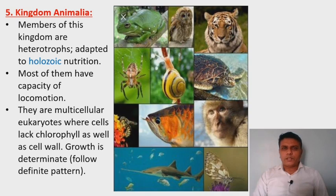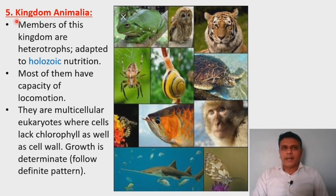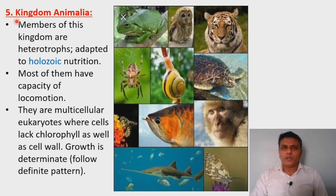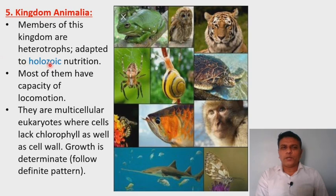The 5th Kingdom in the 5 Kingdom System of Classification is Kingdom Animalia. Kingdom Animalia includes all the animals. Animals in Kingdom Animalia show heterotrophic mode of nutrition, which means the organisms are dependent on other organisms for their food material or nutrition. Animals show the holozoic mode of nutrition, which is a type of heterotrophic mode of nutrition.